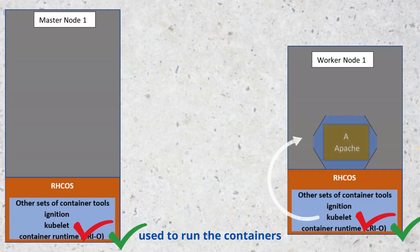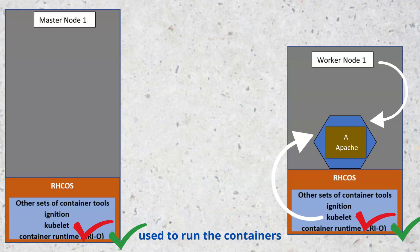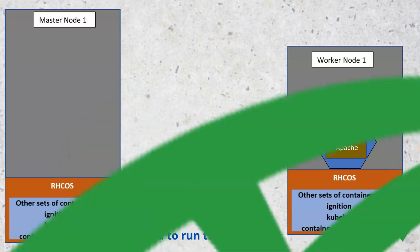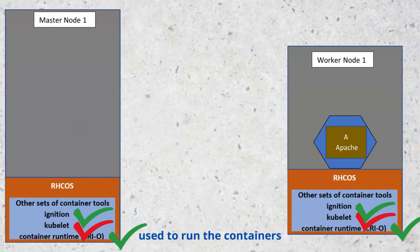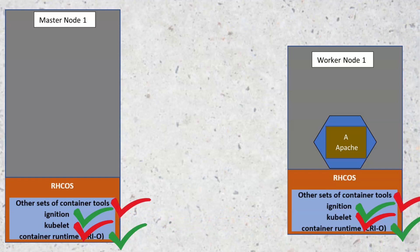The kubelet service is responsible for starting and running the pod; it can also assign resources from the node to the pod. Another feature that RHCOS consists of is Ignition — the OpenShift cluster uses Ignition as a first-boot system configuration to bring up and configure the cluster. RHCOS also consists of some other sets of container tools. In previous versions of OpenShift, the Red Hat Enterprise Linux operating system could be used as the base OS, but for newer versions the Red Hat Core Operating System must be used.